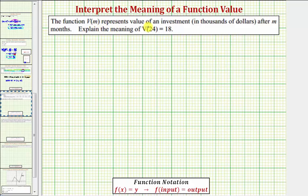The function V of m represents the value of an investment in thousands of dollars after m months.